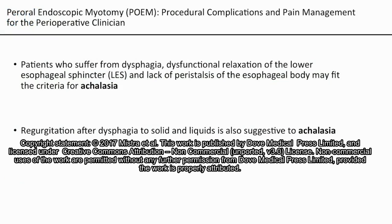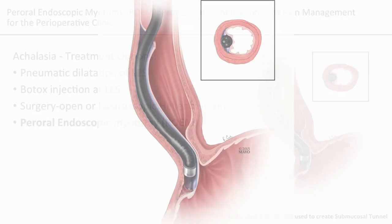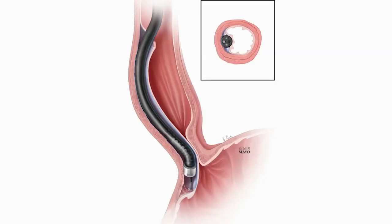Patients who suffer from dysphagia, dysfunctional relaxation of the lower esophageal sphincter, and lack of peristalsis of the esophageal body may fit the criteria for achalasia. Achalasia historically has been treated with pneumatic dilatation of the distal esophagus, botulinum toxin injections, or surgical treatment consisting of open or laparoscopic Heller myotomy. The new minimally invasive endoscopic procedure to treat achalasia is the Peroral Endoscopic Myotomy, or POEM, procedure.